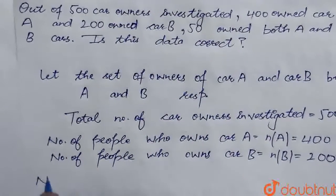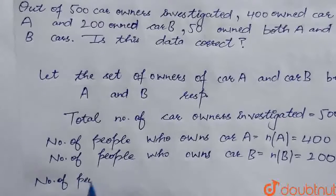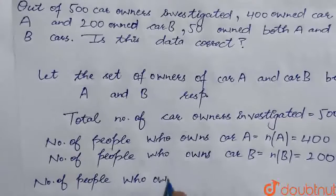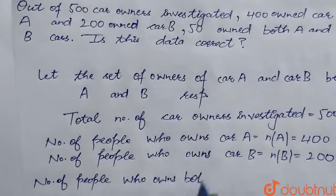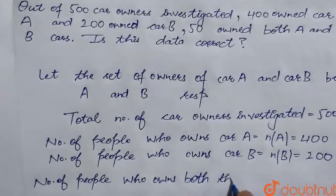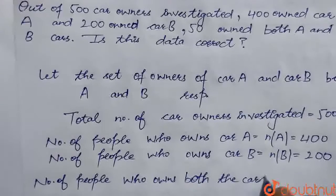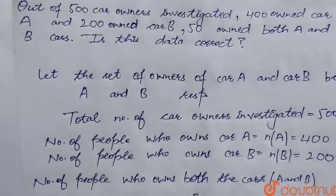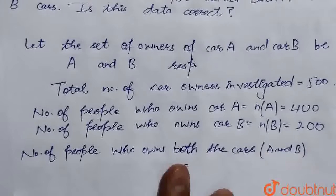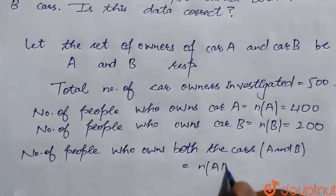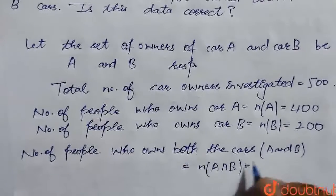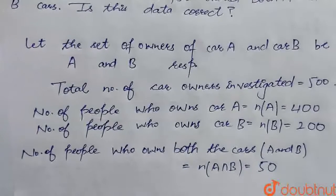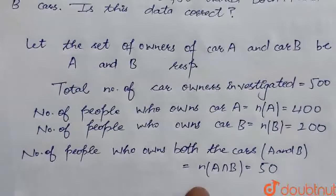Now, the number of people who own both car A and B will be represented in the form of N(A∩B). We are doing this because this is a question of sets, and it will be represented as N(A∩B), which is equal to 50, as we are given.